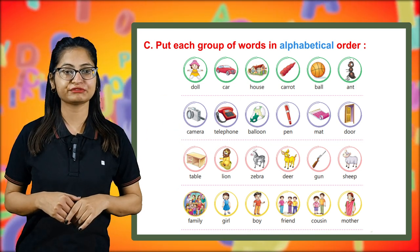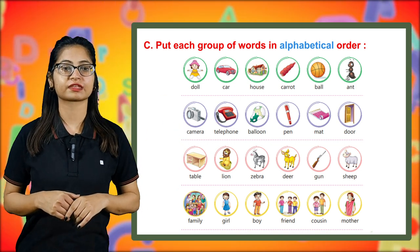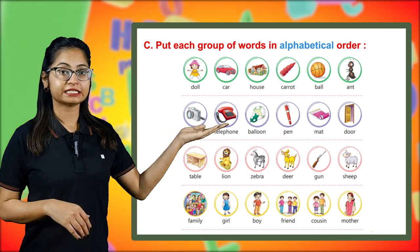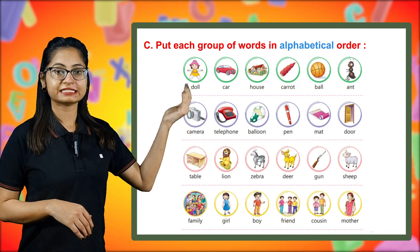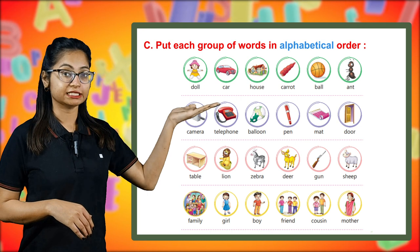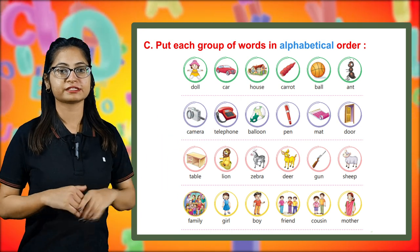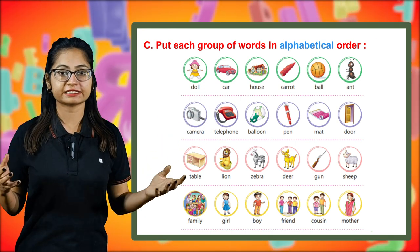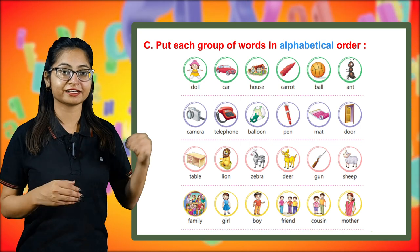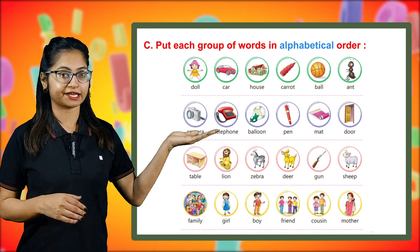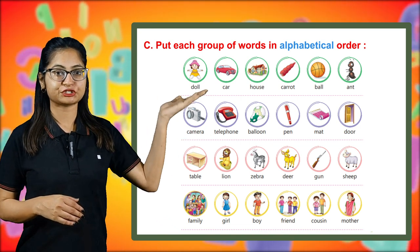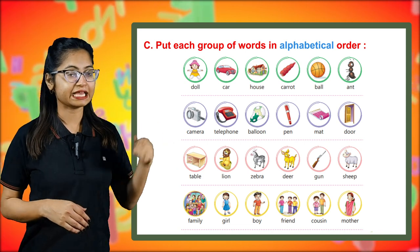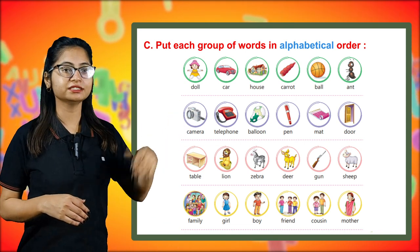The next group has table, lion, zebra, deer, gun, and ship. Arranged in alphabetical order, it will go: deer, gun, lion, ship, table, and then zebra.